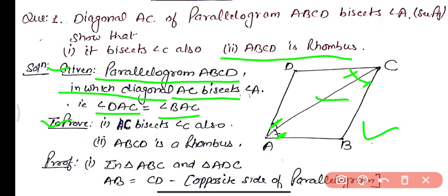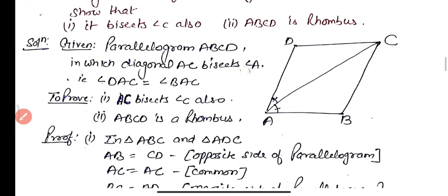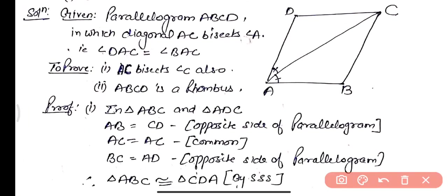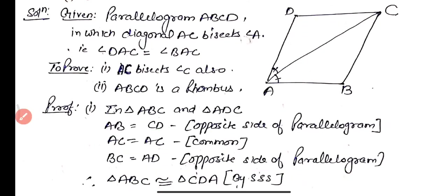In the proof, take two triangles ABC and ADC. In triangle ABC and ADC: AB equals CD as these are opposite sides of the parallelogram, AC is common to both, and BC equals AD as these are also opposite sides of the parallelogram.